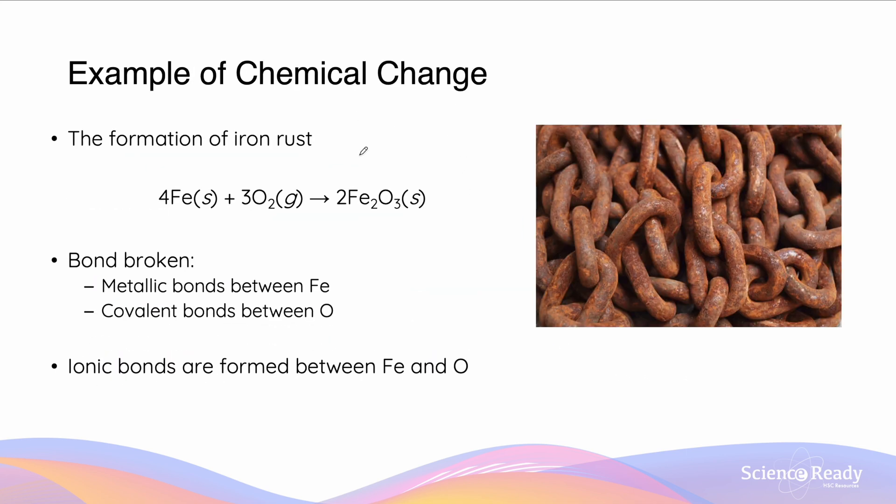An example of chemical change is the formation of iron rust. This occurs when iron metal becomes exposed to oxygen gas and it forms a layer of iron oxide on the surface, which has the characteristic orange and brown tinge. This is an example of a chemical change because the metallic bonds which hold the iron together are being broken, and the covalent bonds between the oxygen are being broken, and then ionic bonds are being formed between the iron and the oxygen to form the iron oxide.